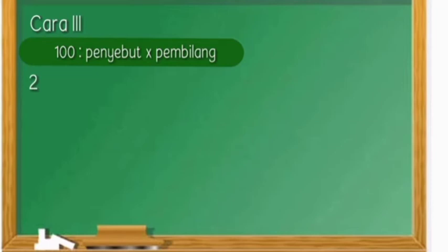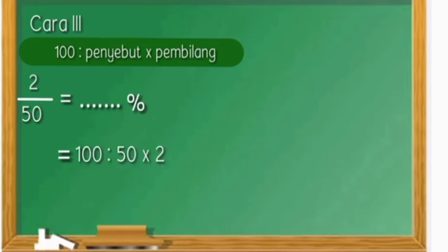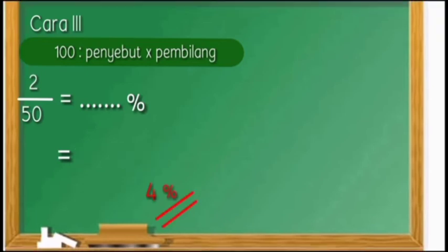Cara yang ketiga: seratus dibagi penyebut, kali pembilang. Contohnya, dua per lima puluh sama dengan berapa persen? Artinya, seratus dibagi lima puluh kali dua. Seratus dibagi lima puluh sama dengan dua, dua kali dua sama dengan empat persen.